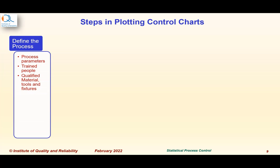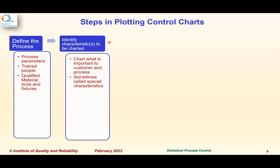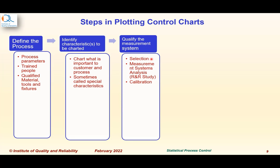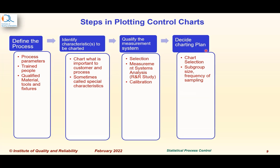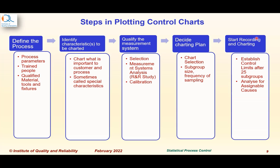Let us now understand the steps in control charting. Define the process and process parameters including trained people, qualified material, tools and fixtures. Identify characteristics to be charted considering importance to the customer and business. Qualify the measurement system, including selection of measurement system, measurement system analysis, and calibration. Decide the charting plan, select the appropriate control chart, and start recording and charting. Establish control limits after 25 subgroups and analyze for assignable causes.